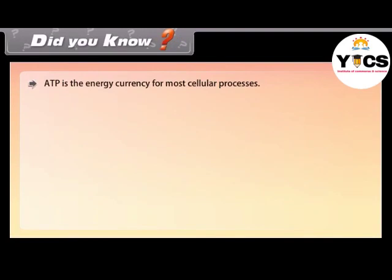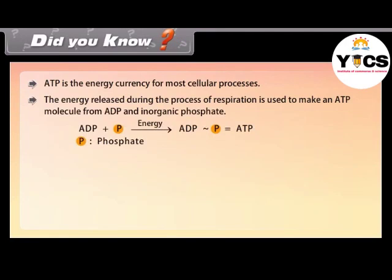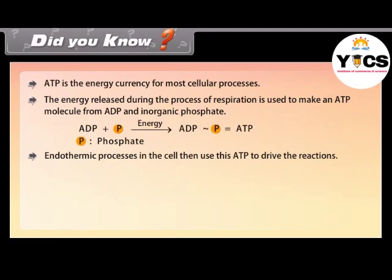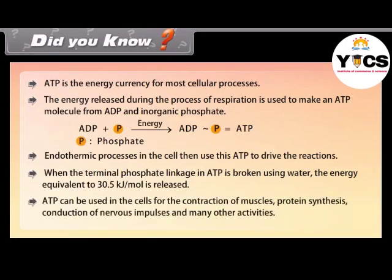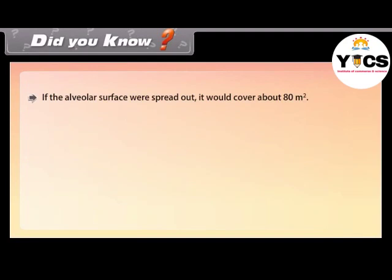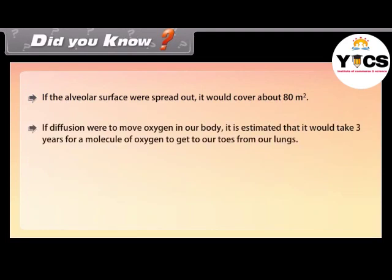ATP is the energy currency for most cellular processes. The energy released during respiration is used to make an ATP molecule from ADP and inorganic phosphate. Endothermic processes in the cell use ATP to drive reactions. When the terminal phosphate linkage in ATP is broken using water, energy equivalent to 30.5 kJ per mol is released. ATP can be used in cells for muscle contraction, protein synthesis, conduction of nervous impulses, and many other activities. If the alveolar surface were spread out, it would cover about 80 square meters. If diffusion alone were to move oxygen in our body, it would take an estimated 3 years for a molecule of oxygen to reach our toes from our lungs.